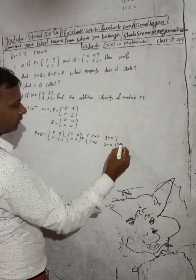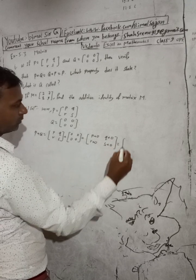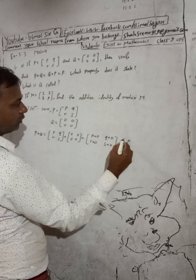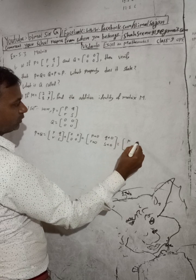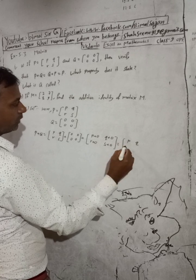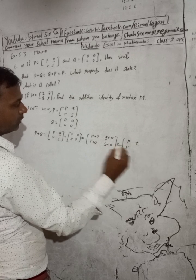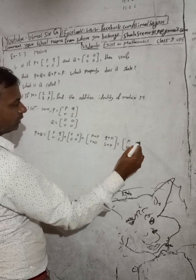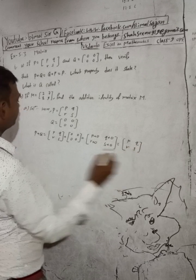This is equal to how much? p plus 0 is p, q plus 0 is q, r plus 0 is r, s plus 0 is s. So we got the same matrix [p, q, r, s]. Okay, we got the same result — P plus Q equals P.